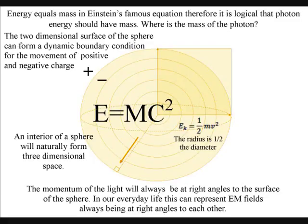Energy equals mass in Einstein's famous equation, therefore it is logical that photon energy should have mass. But in mainstream theoretical physics, the photon only has energy and momentum. This video is going to try and answer the question: why does light have no mass? Where is the mass of the photon?